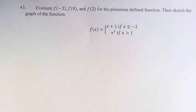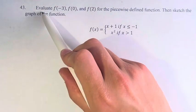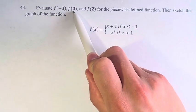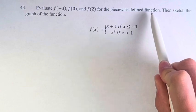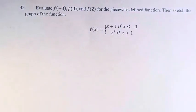Hello and welcome back to another video. In this problem, we're asked to evaluate f of negative 3, f of 0, and f of 2 for the piecewise defined function. Then, to sketch the graph of the function.